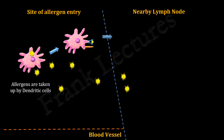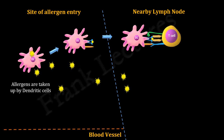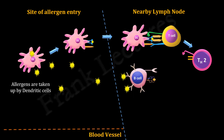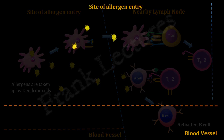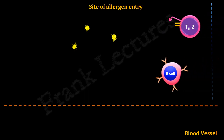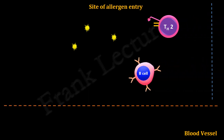Dendritic cells migrate to nearby lymph nodes, where they present these antigens to naive T helper cells. Naive T helper cells get activated and differentiate into T helper type 2 cells. Within the lymph node, naive allergen-specific B cells are also activated by allergens. They proliferate and differentiate into antibody-secreting plasma cells. These allergen-activated B cells and T helper type 2 cells then migrate to the target site into which the allergen first entered, and they work together to eliminate the antigen.